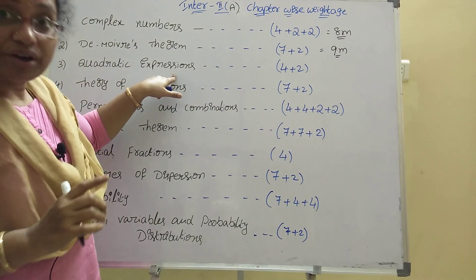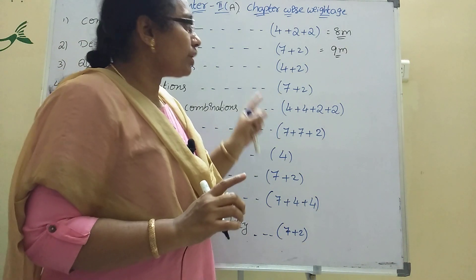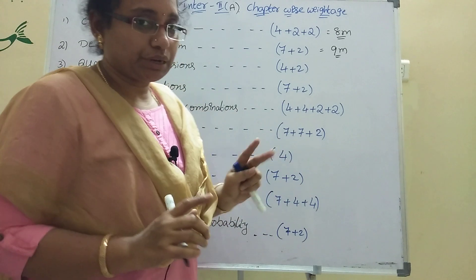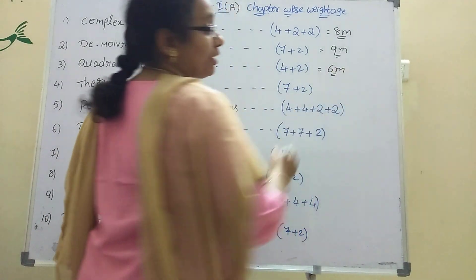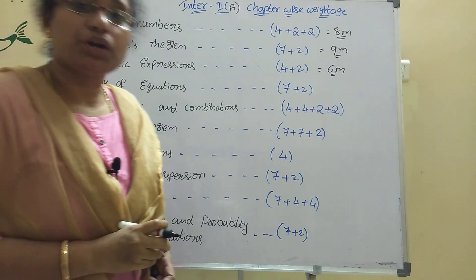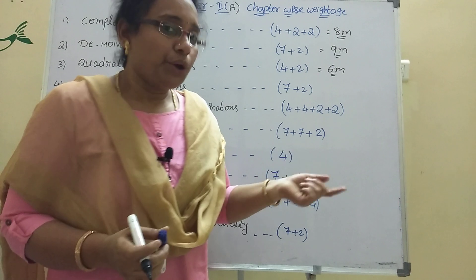Quadratic expressions: 4 plus 2, one 4-mark plus one 2-mark will be 6 marks total. One 4-mark and one 2-mark. Already I posted one video, you can check.